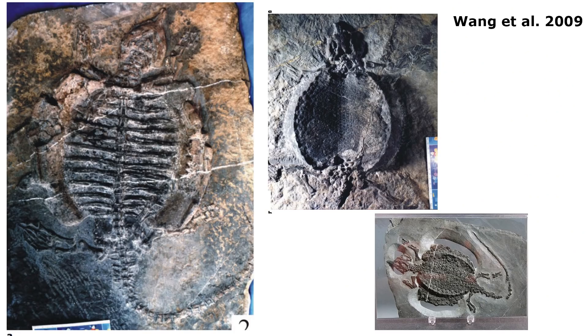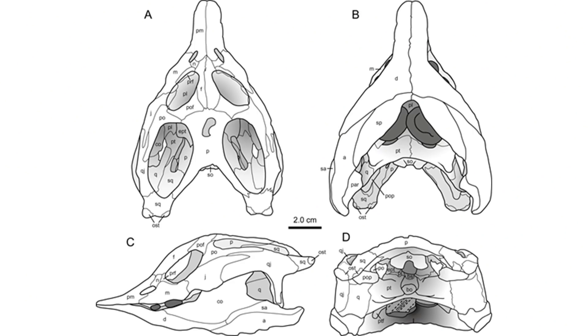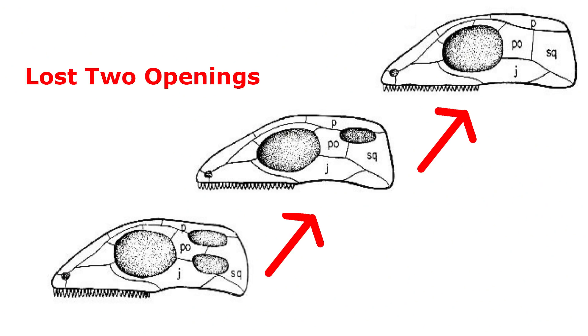Interestingly, researchers noticed a relationship between the turtle-like placodont marine reptiles, which had a single upper hole but lacked the lower hole. This derived condition is called the euryapsid condition, where the lower hole is lost. It was now thought that placodonts, which resembled turtles, were related to them because they showed an intermediate transition between the two holes found in the diapsid condition of the earliest turtles, Pappochelys, and the zero-hole condition found in Odontochelys and Proganochelys.